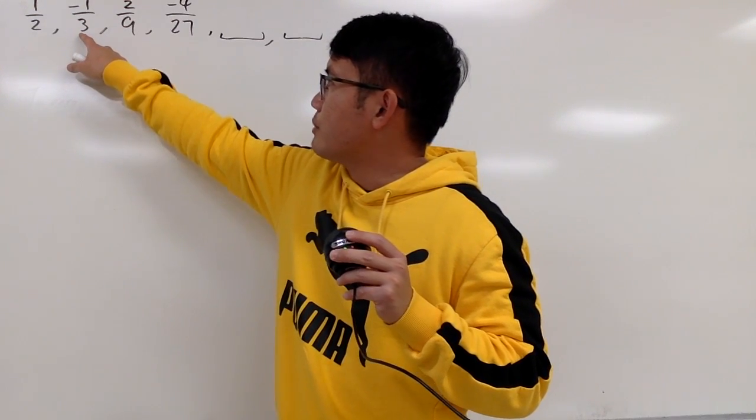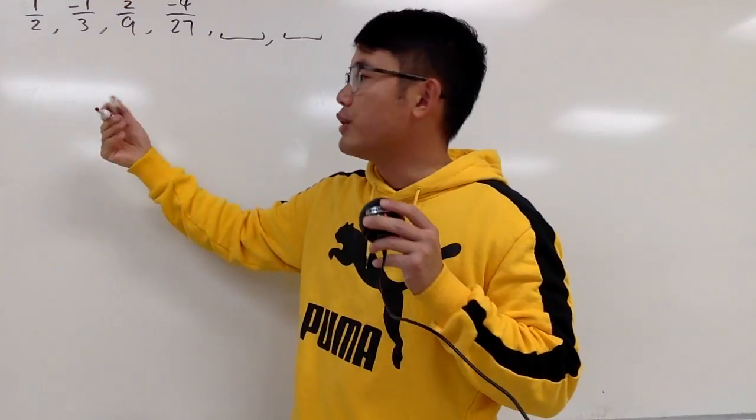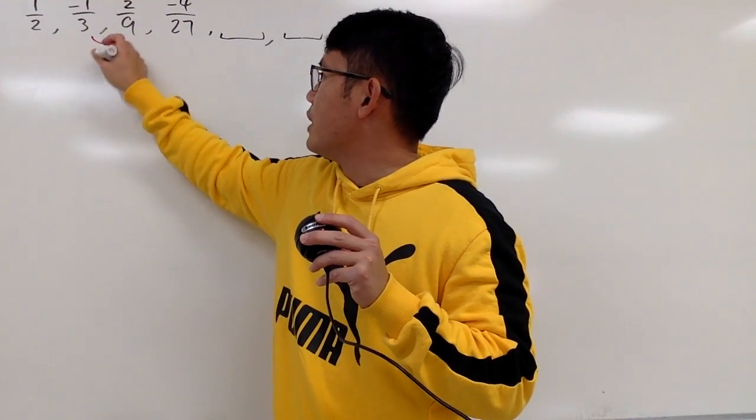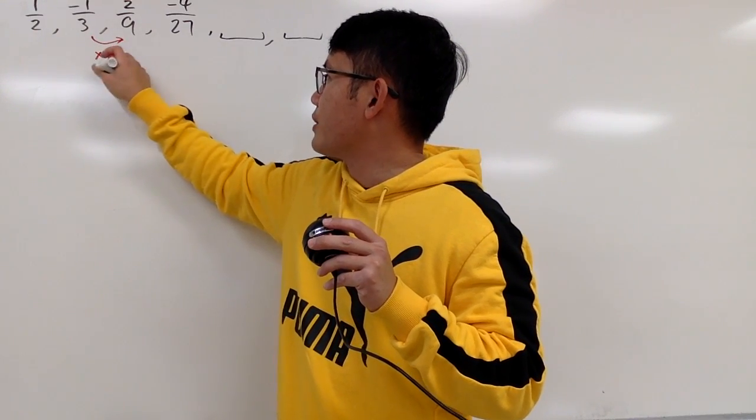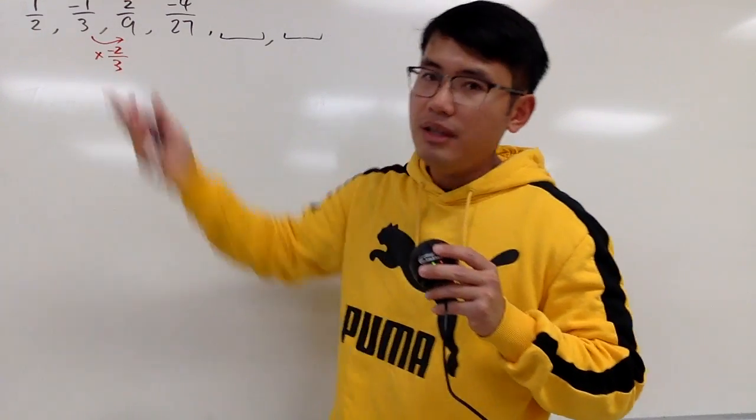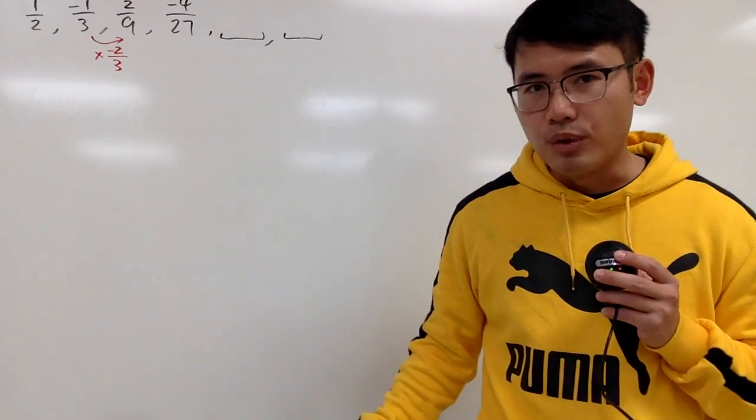So in other words, to go from here to here, we can just multiply by -2 on the top and then 3 on the bottom. In other words, it's just multiplied by -2/3.